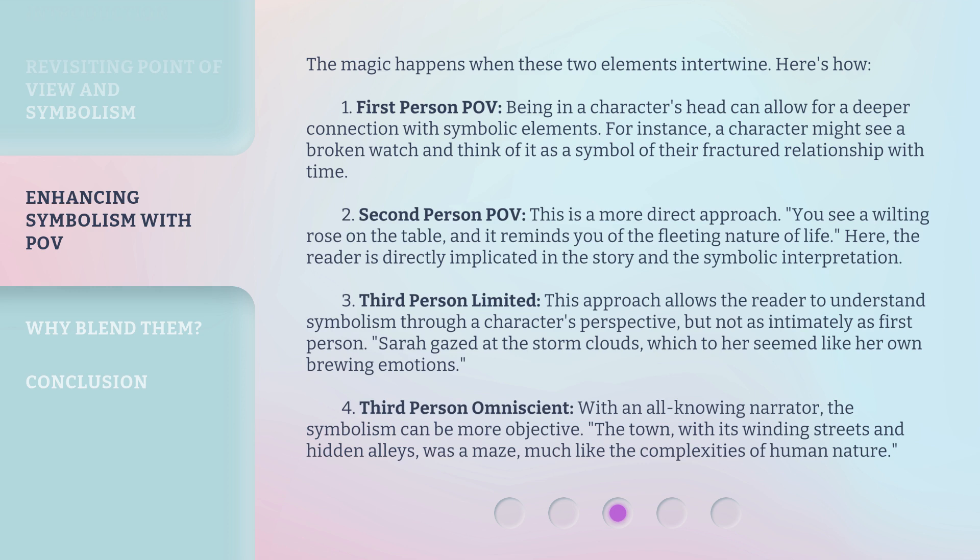Third person limited allows the reader to understand symbolism through a character's perspective, but not as intimately as first person. For example: Sarah gazed at the storm clouds, which to her seemed like her own brewing emotions. Third person omniscient: with an all-knowing narrator, the symbolism can be more objective — the town, with its winding streets and hidden alleys, was a maze, much like the complexities of human nature.